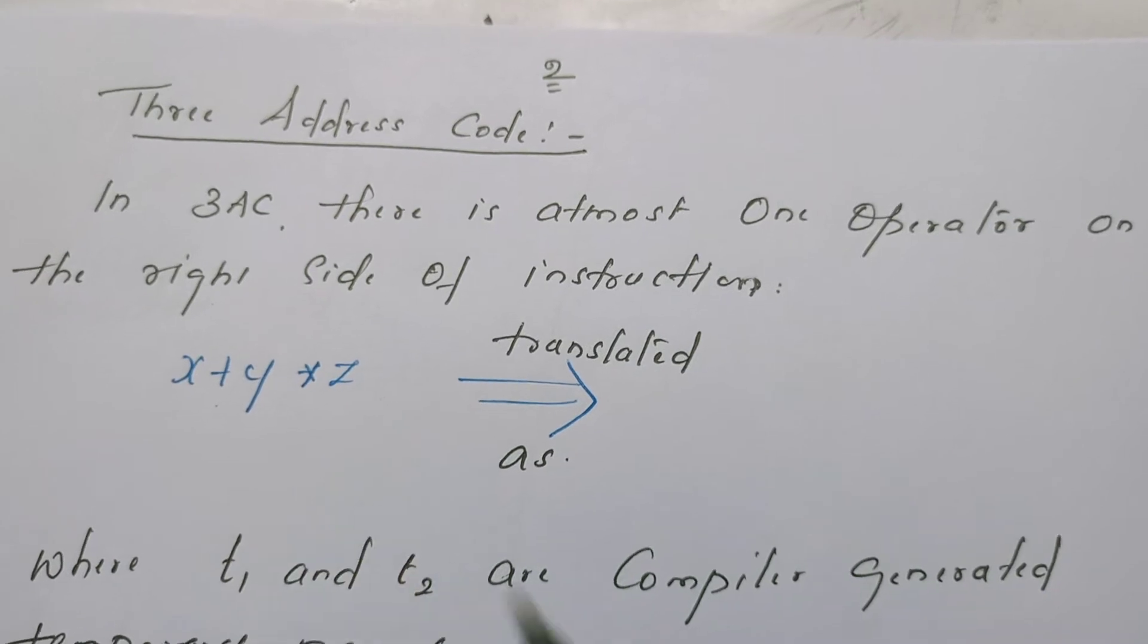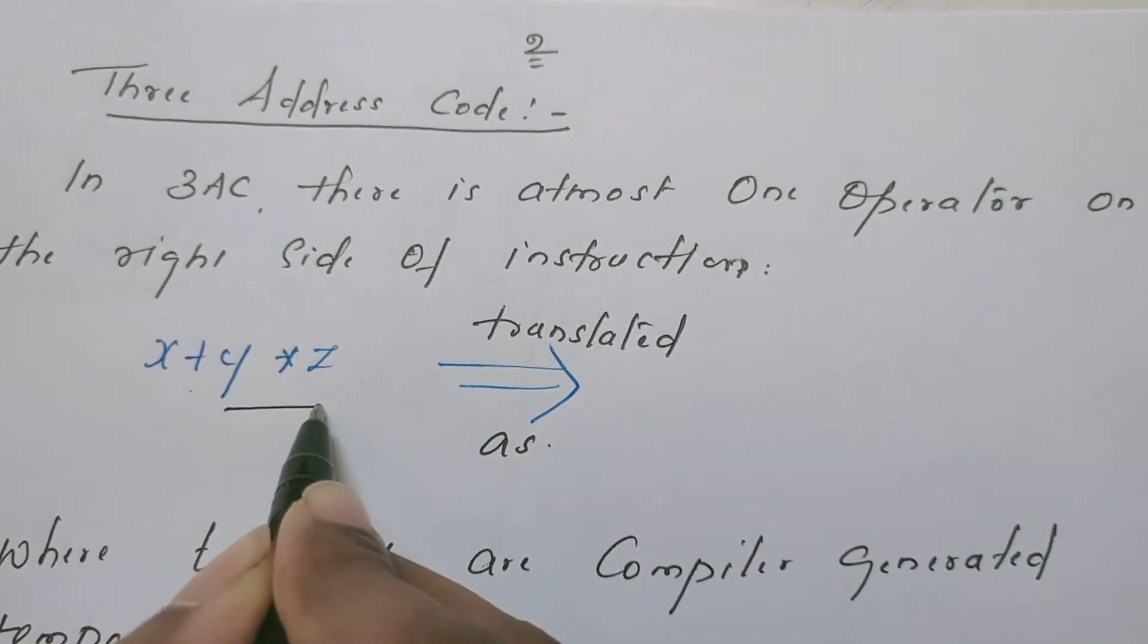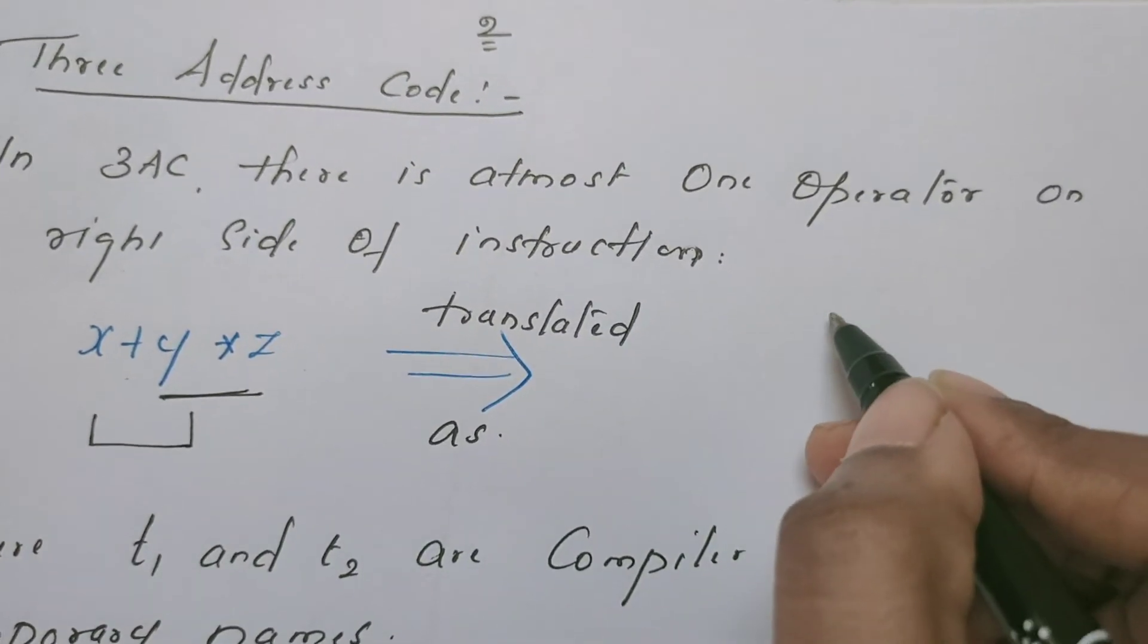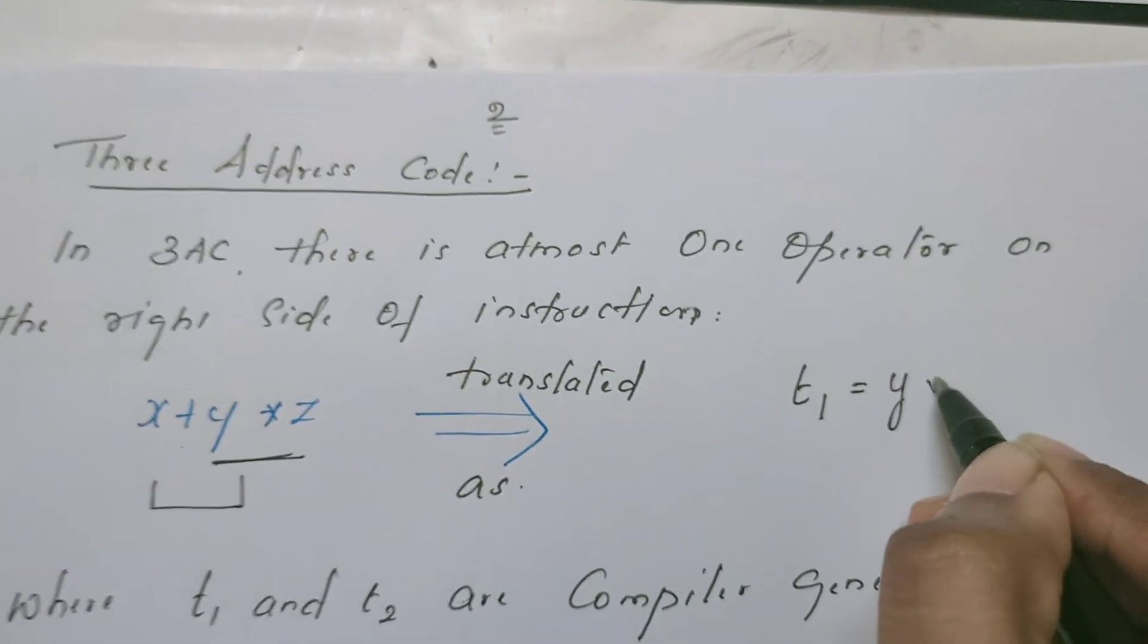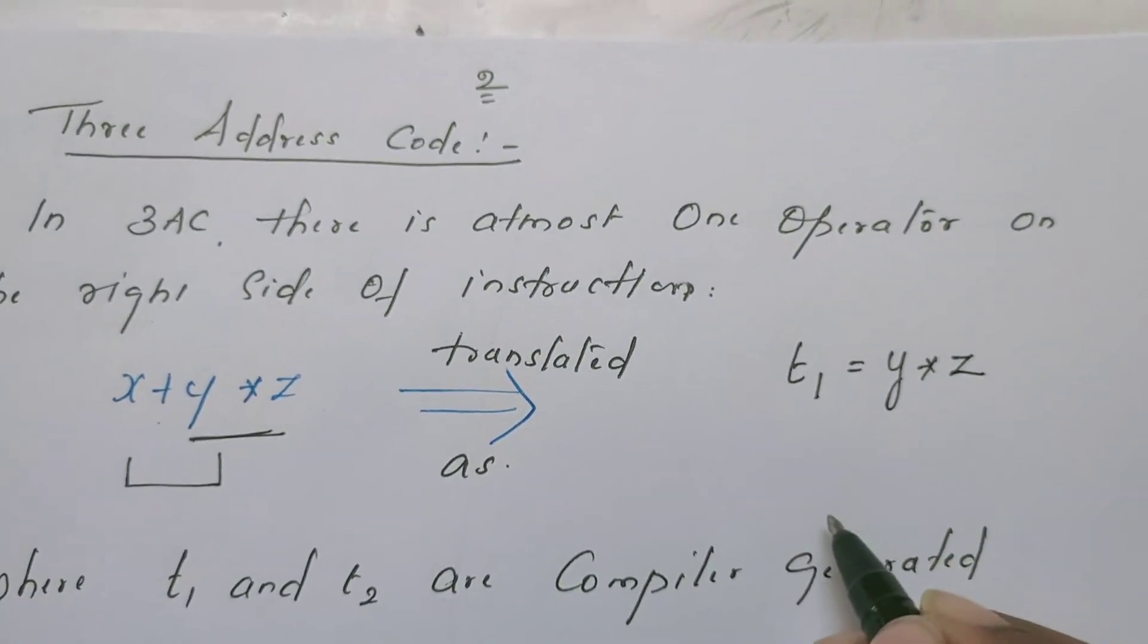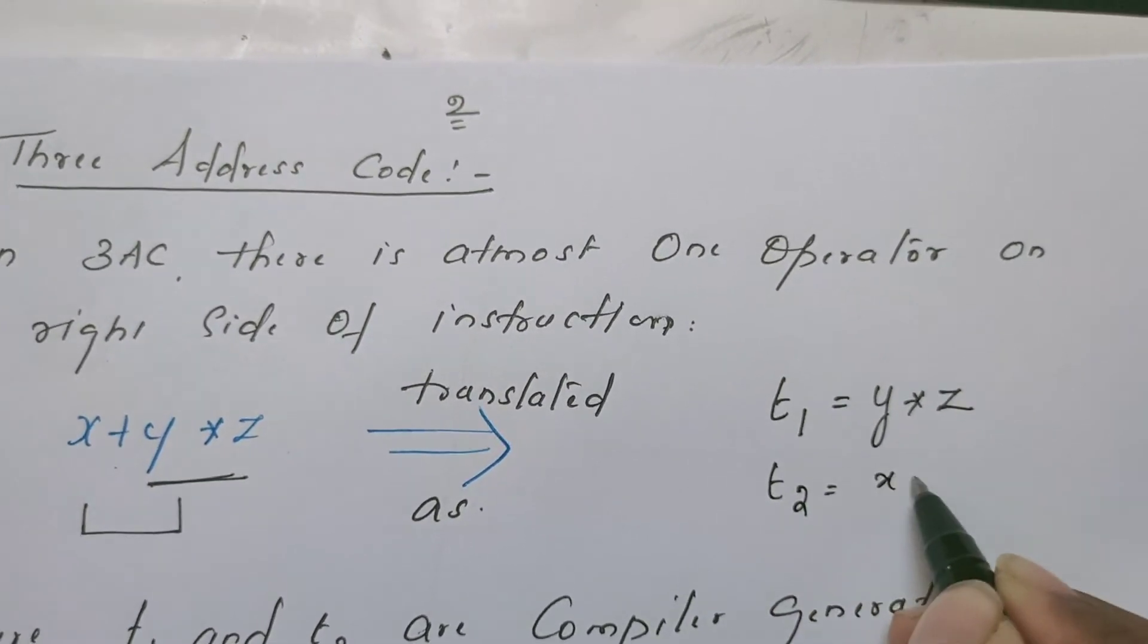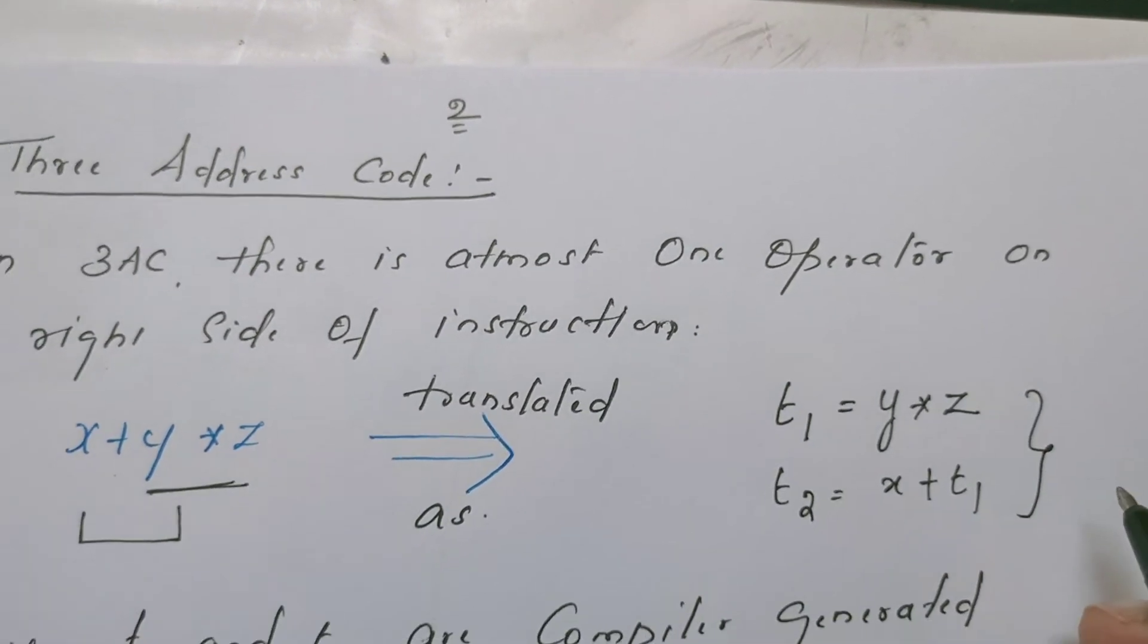x plus y into z can be written like this. In this expression, first the multiplication operation has to take place, then that must be added with x. So we can write like this: t1 is equal to y into z, then t2 is equal to x plus t1. This is the best example for 3 address code.